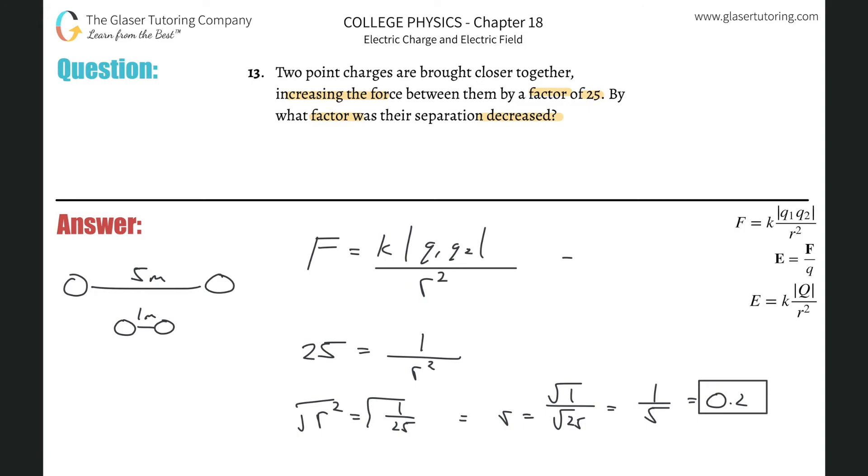If I plug in 5 for my r value, in terms of factor changes it would have been 1 over 5 squared, which is 1/25. Notice that if I were to go from 1 meter to 5 meters, the force would have decreased by 1/25 of its original.